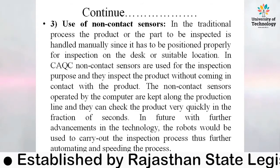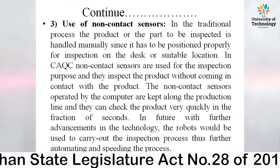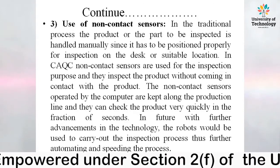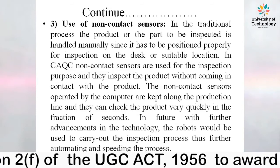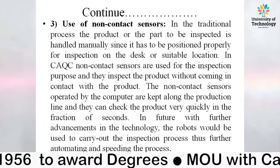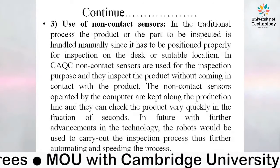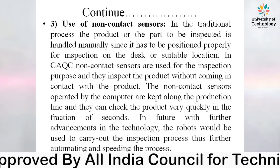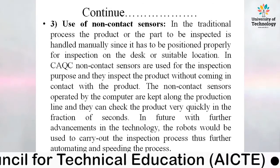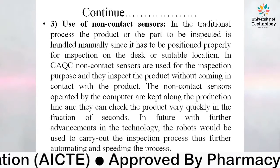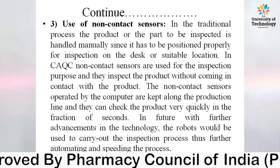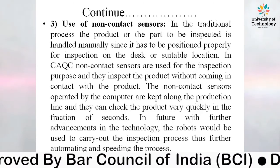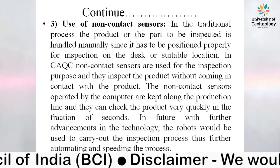The third advantage is the use of non-contact sensors in Computer Aided Quality Control. In the traditional process, the product or part to be inspected is handled manually and positioned on a desk or suitable location. In Computer Aided Quality Control, non-contact sensors are used for inspection and they inspect the product without coming in contact with it. These sensors, operated by computer and kept along the production line, can check the product very quickly in a fraction of a second. In future, with further advancement in technology, robots should be used to carry out the inspection process, further automating and speeding the process.